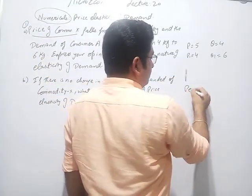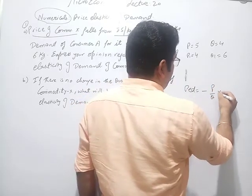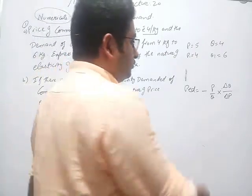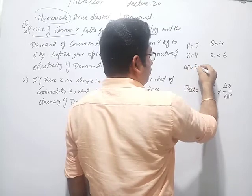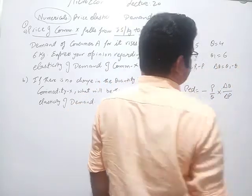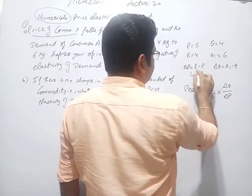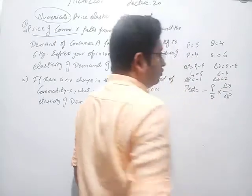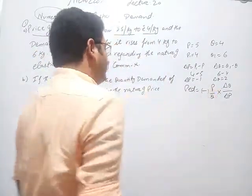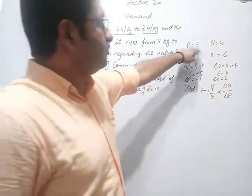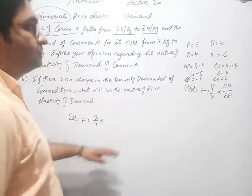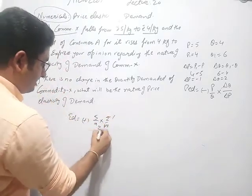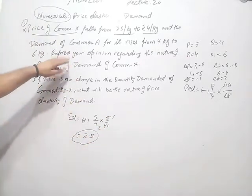Where we have these four values we will use the formula: price elasticity of demand is equal to minus P upon Q into change in Q upon change in P. Now let us substitute the values. Change in P is equal to P1 minus P, and change in Q is equal to Q1 minus Q. Delta P is 4 minus 5 equals minus 1, and delta Q is 6 minus 4 equals 2. Substituting: ED equals minus of 5 upon 4 into 2 upon minus 1 — the answer is 2.5.